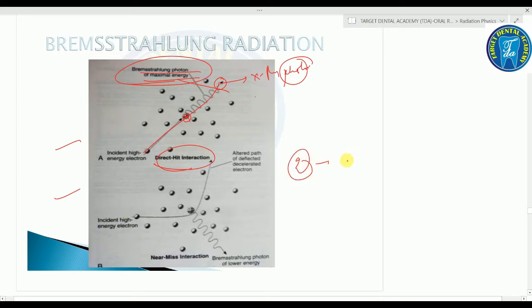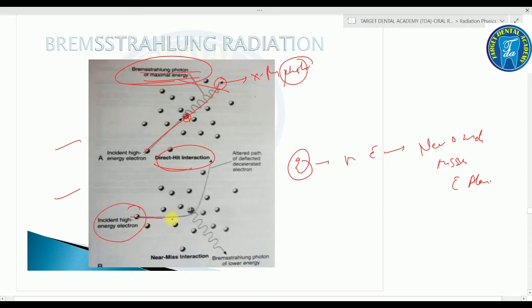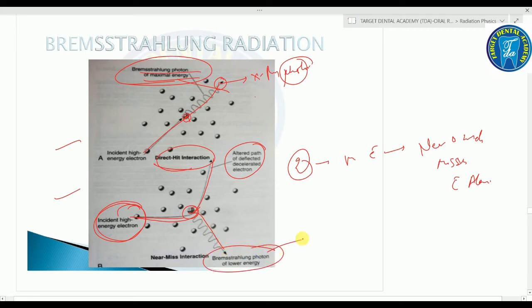Second, most high-speed electrons have near or wide misses with atomic nuclei. When a negatively charged high-speed electron is attracted toward the positively charged nucleus, it loses some velocity and alters its path — producing decelerated, deflected Bremsstrahlung photons of lower energy.